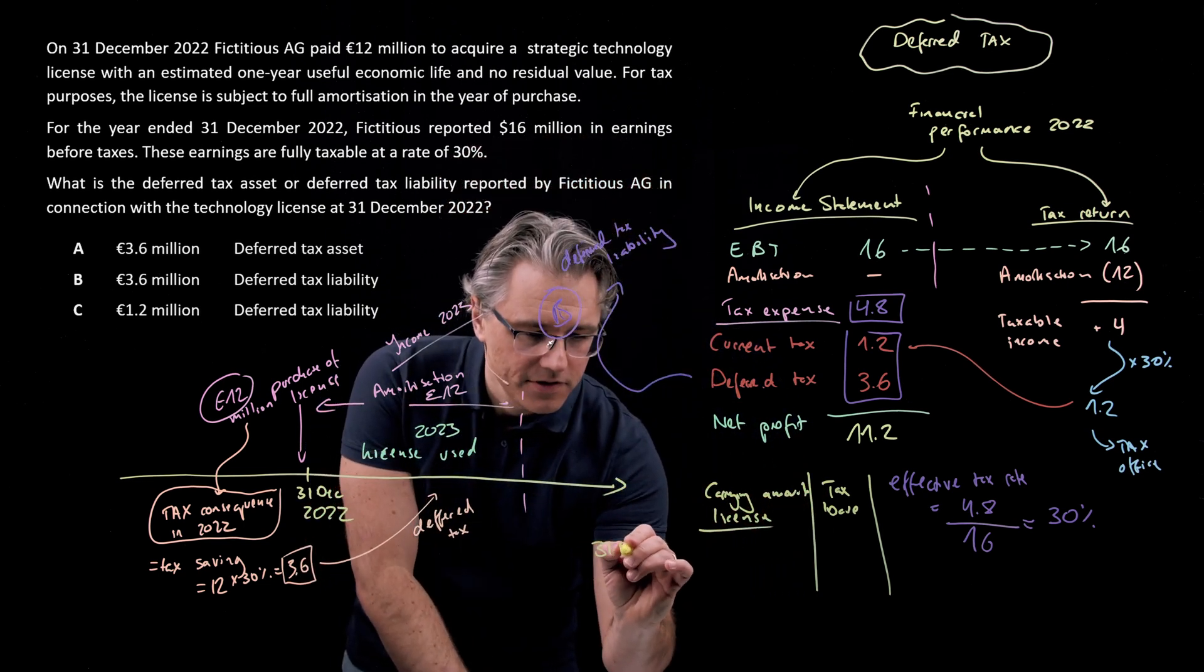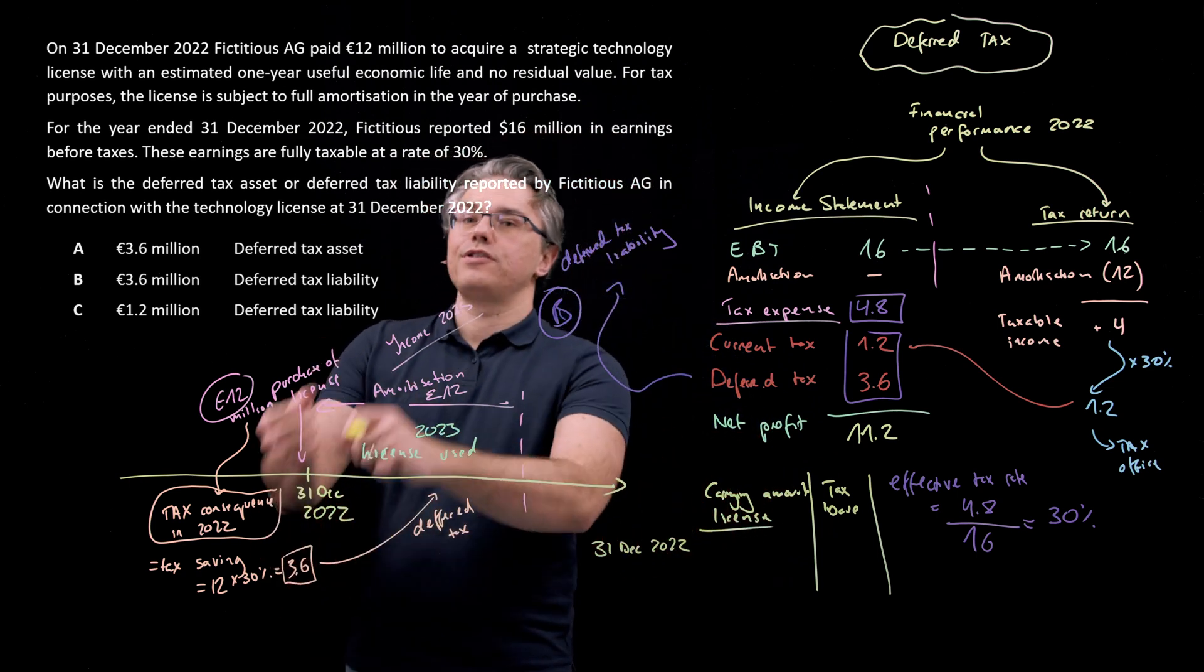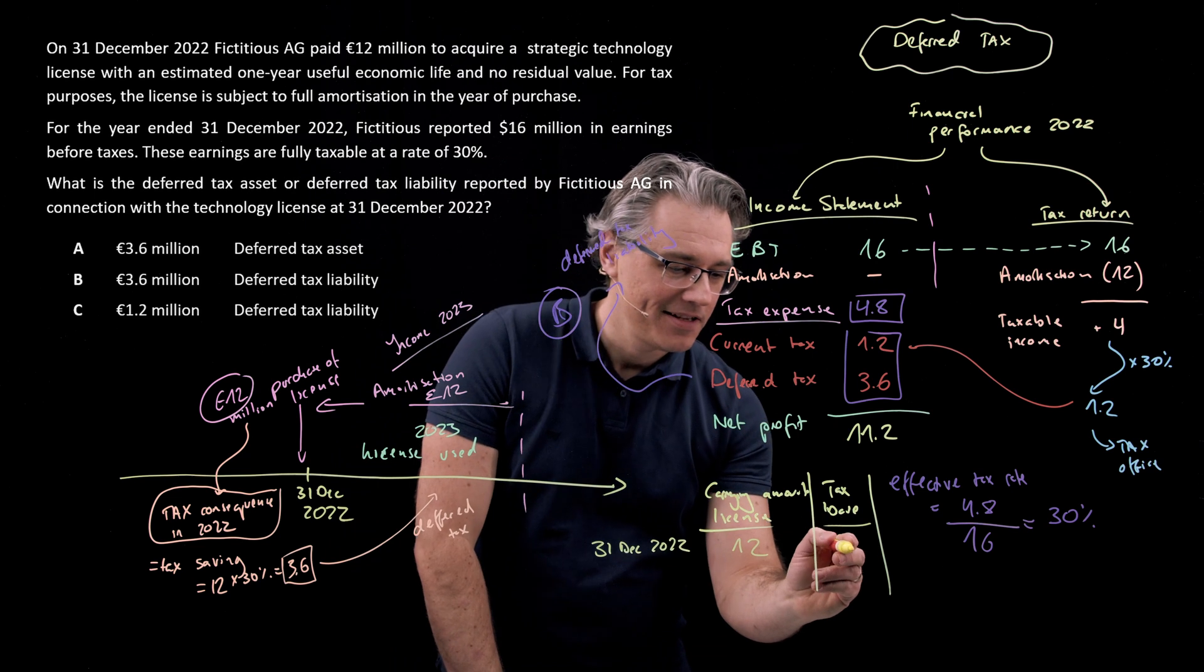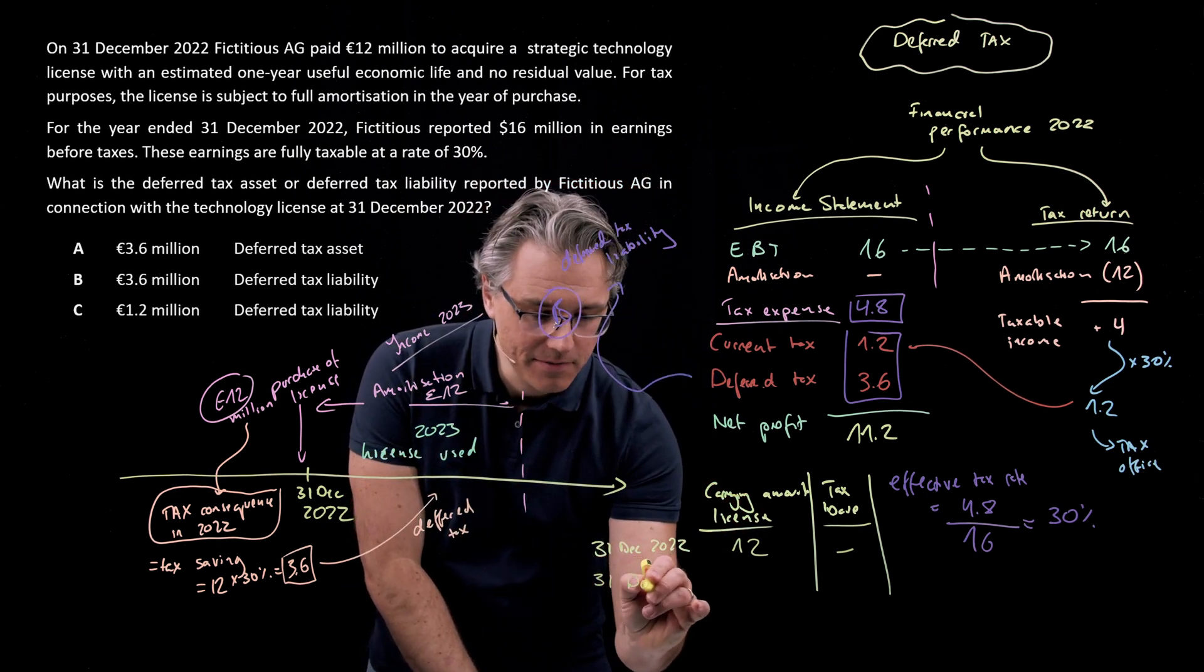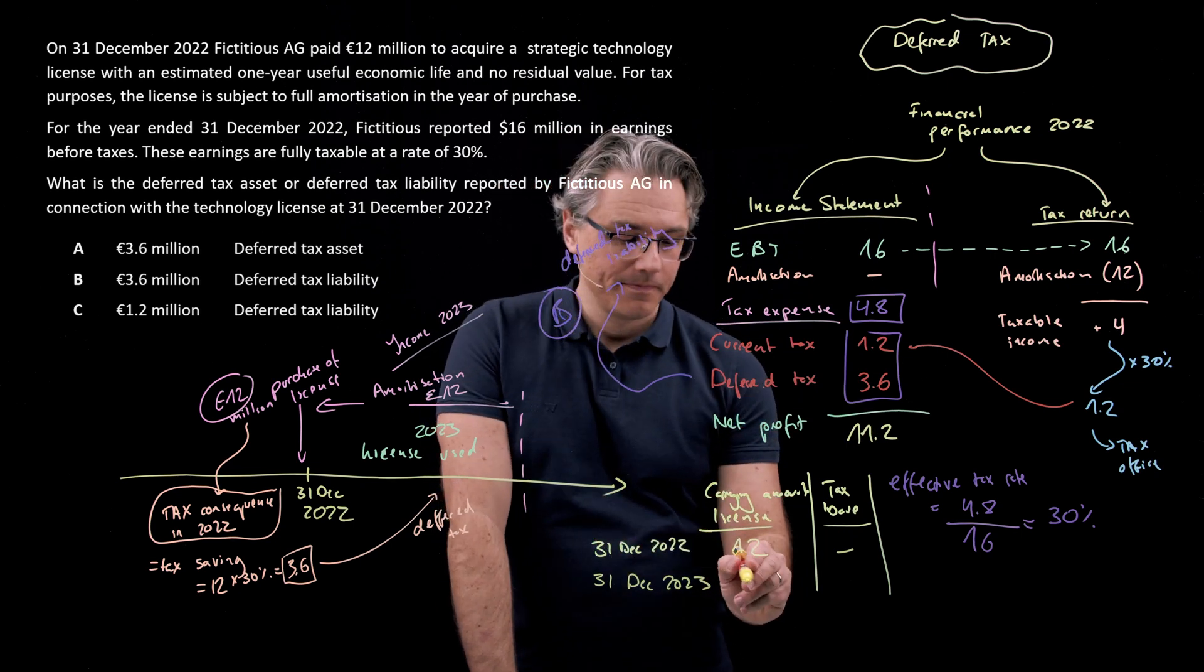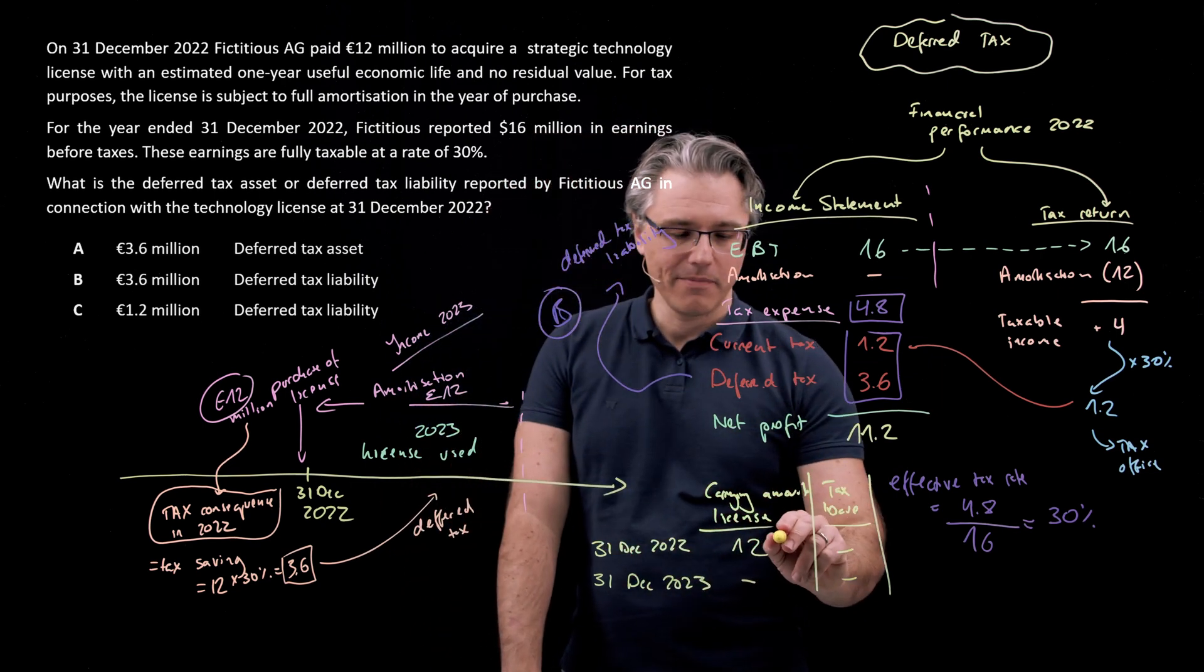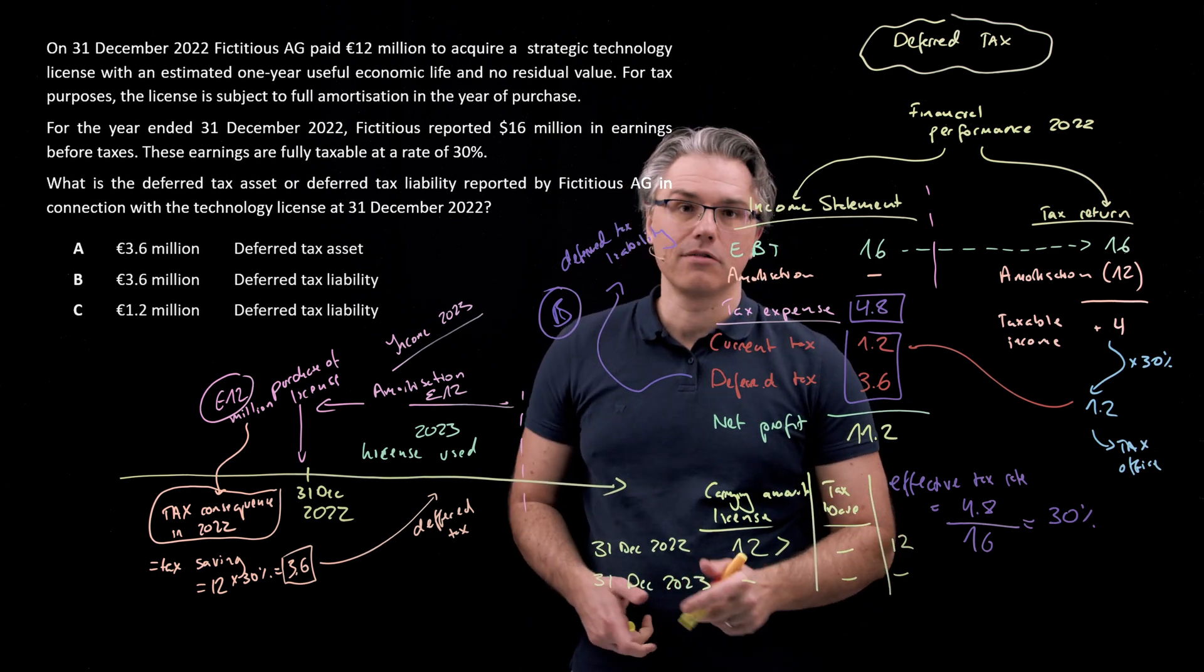At the 31st of December 2022, from a financial reporting perspective, IFRS or US GAAP, we've just introduced the license into our balance sheet. Its carrying value is 12. We introduced it also for tax purposes but immediately amortized it fully down to zero, so it has no carrying amount from a tax perspective, no tax base. One year later, 31st of December 2023, from a financial reporting perspective, the license would have already been amortized down to zero because it had only a one year useful life. From a tax perspective, it's already been amortized, so there's still zero. So temporarily, we've got the carrying amount of the asset being higher than its tax base, and it's a temporary difference of 12, which is temporary because it subsequently becomes zero.